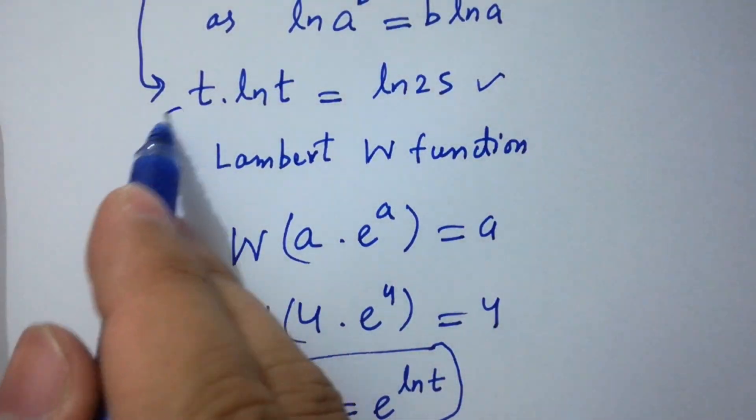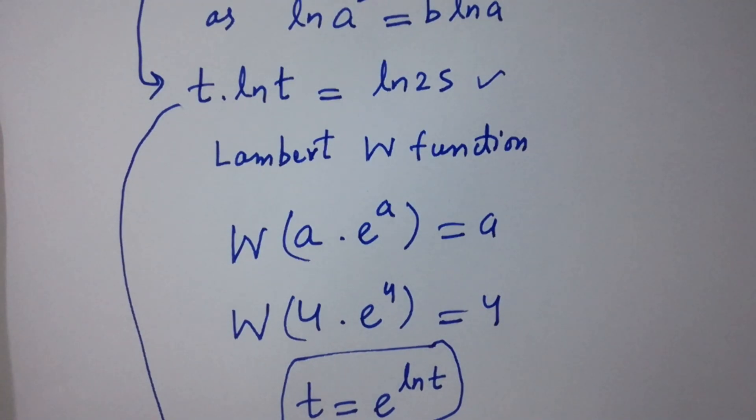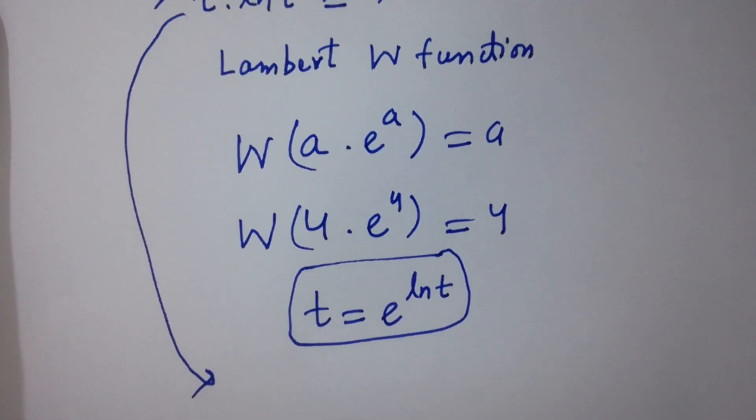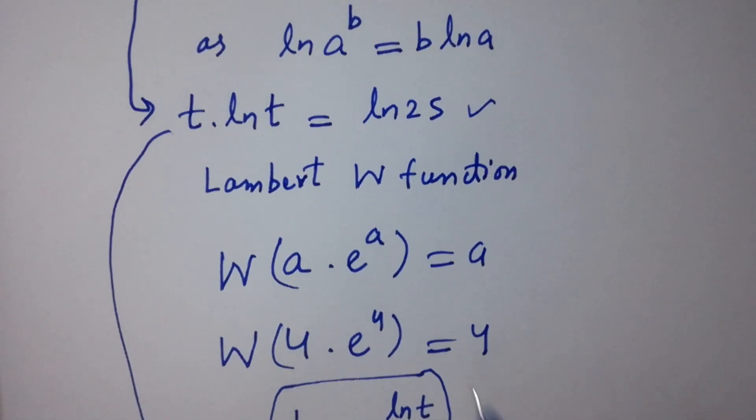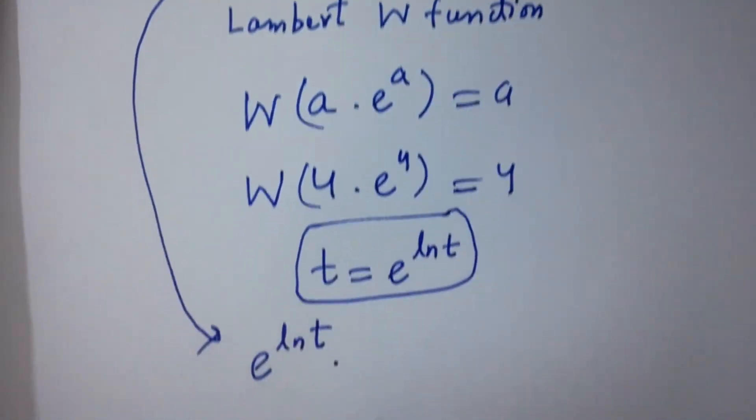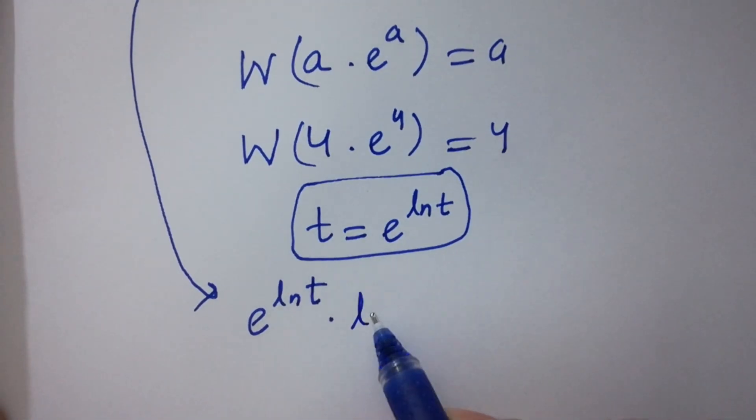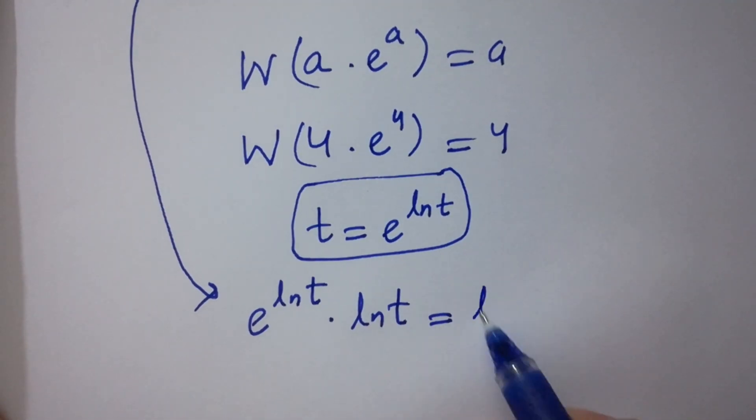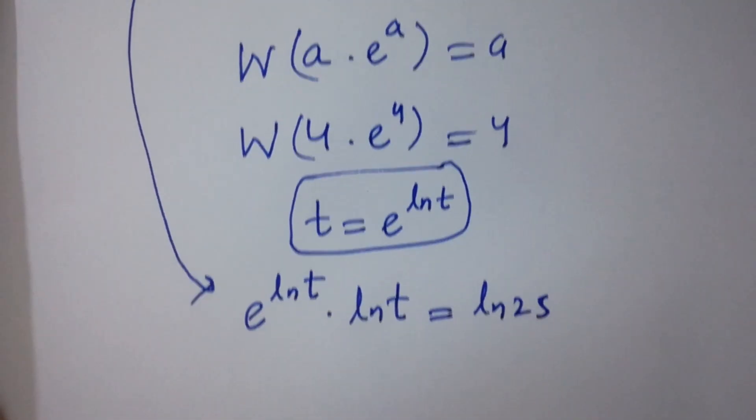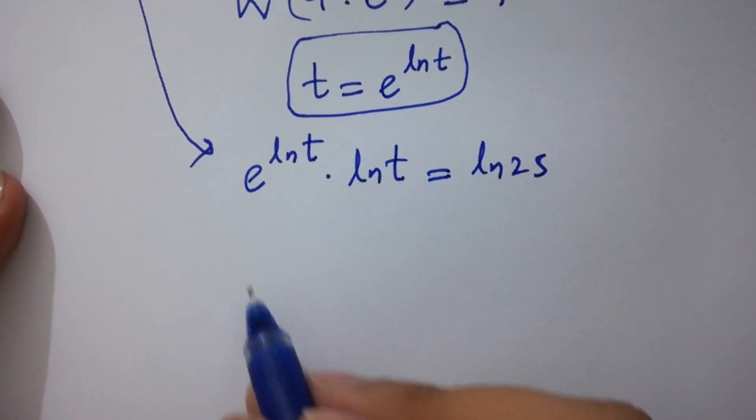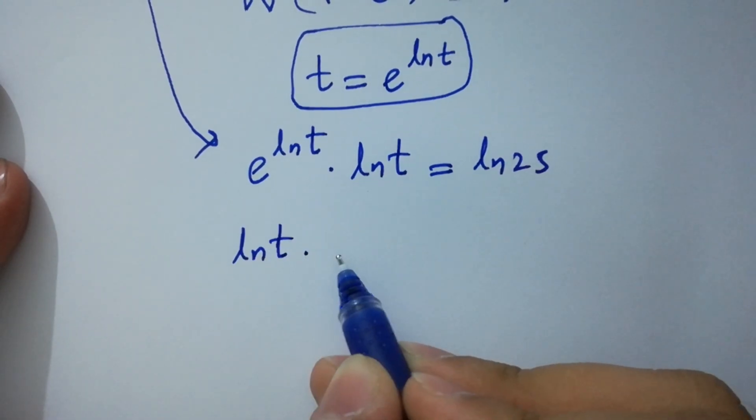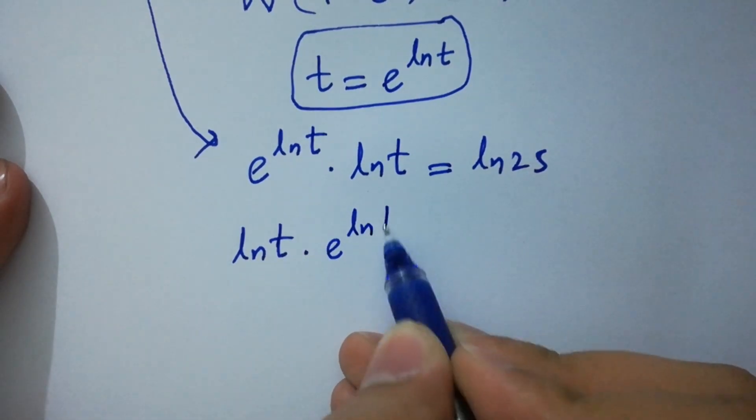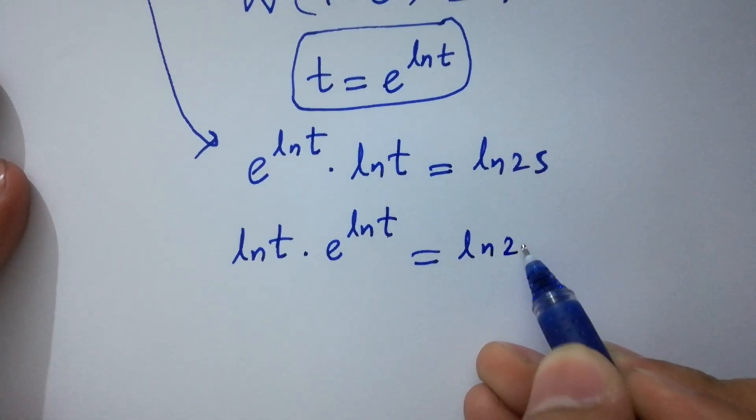So we can write it as t ln t equal to ln 25 will be here e to the power ln t times ln t as it is equal to ln 25. It can be written as ln t times e to the power ln t equal to ln 25.